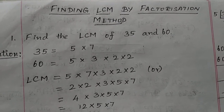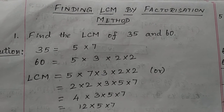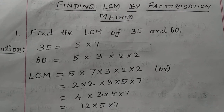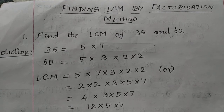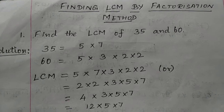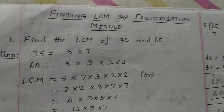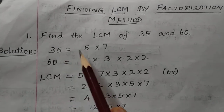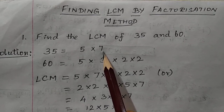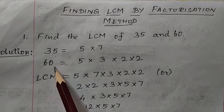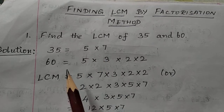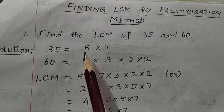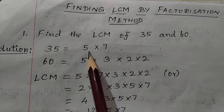Finding LCM by factorization method. In the previous method, we found LCM by finding multiples, then common multiples, then the smallest common multiple. Now we are going to learn another method called factorization method. Find the LCM of 35 and 60. The process of expressing a given number as a product of its factors is called factorization.